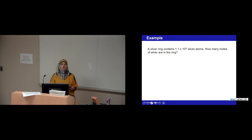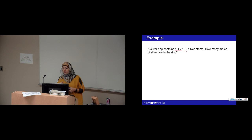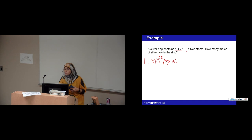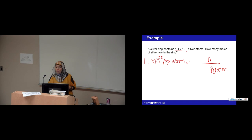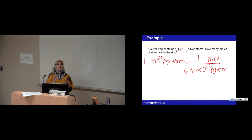Now let's do it the other way around. Let's say I give you the number of atoms — for example, silver atoms — and ask how many moles that is. Always begin with what you were given. Here we have 1.1 times 10 to the 22nd silver atoms. Since we have silver atoms on top, we put silver atoms on the bottom and moles on top. The mole pretty much always gets the 1, because 1 mole has 6.022 times 10 to the 23rd atoms.